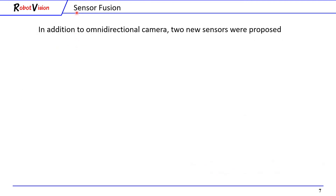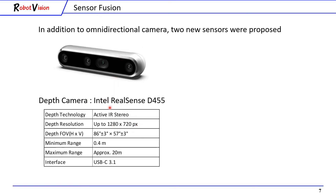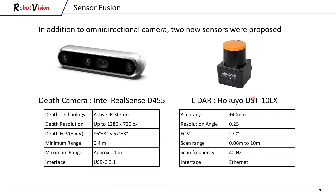To solve this issue, we propose a new method called sensor fusion, combining two new sensors alongside the omnidirectional camera. The first sensor is a depth camera using IR stereo technology that can measure from 0.4 meters to 20 meters. The second sensor is a lidar, a 2D scanner that can measure from 0.06 meters to 10 meters. The field of view of the depth camera is 86 degrees, while the lidar covers 270 degrees. In theory, by combining these two sensors, they can cover 360 degrees just like an omnidirectional camera.